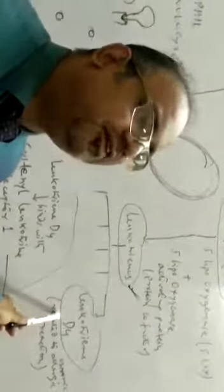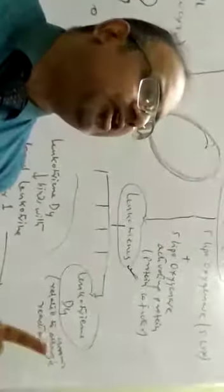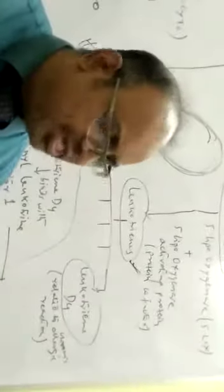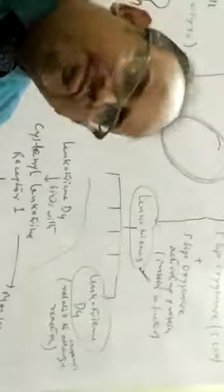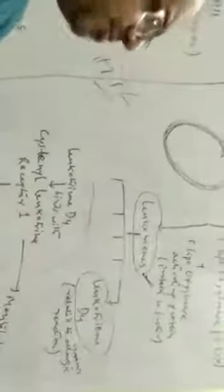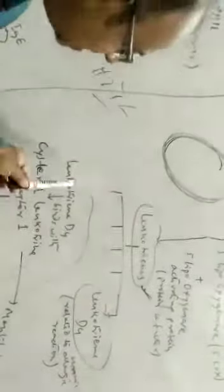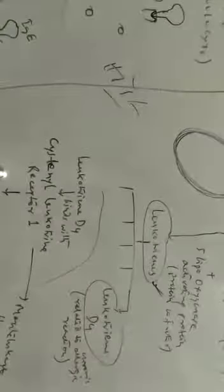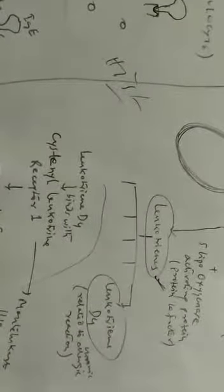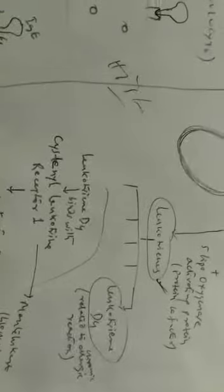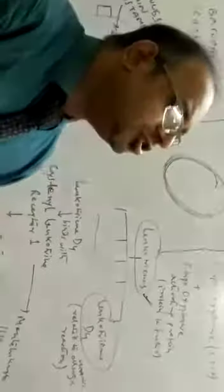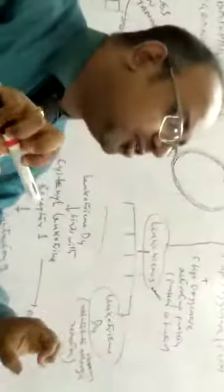The product is leukotriene D4. Leukotriene D4 binds to the cysteinyl leukotriene receptor — specifically cysteinyl leukotriene receptor 1. When leukotriene D4 binds to this cysteinyl leukotriene receptor 1, it causes bronchoconstriction — constriction of the bronchi.